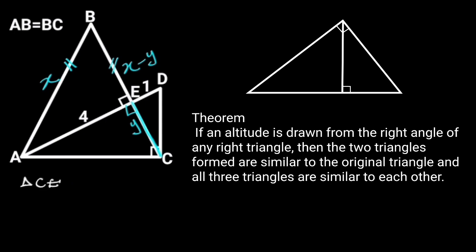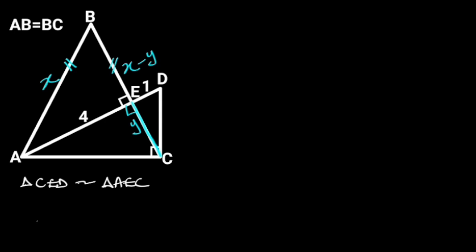triangle CED is similar to triangle AEC. And the proportionality of their corresponding sides is EC over ED is equal to AE over EC. EC is equal to Y, ED is 1, and AE is 4. Substituting these values in the above equation will give us